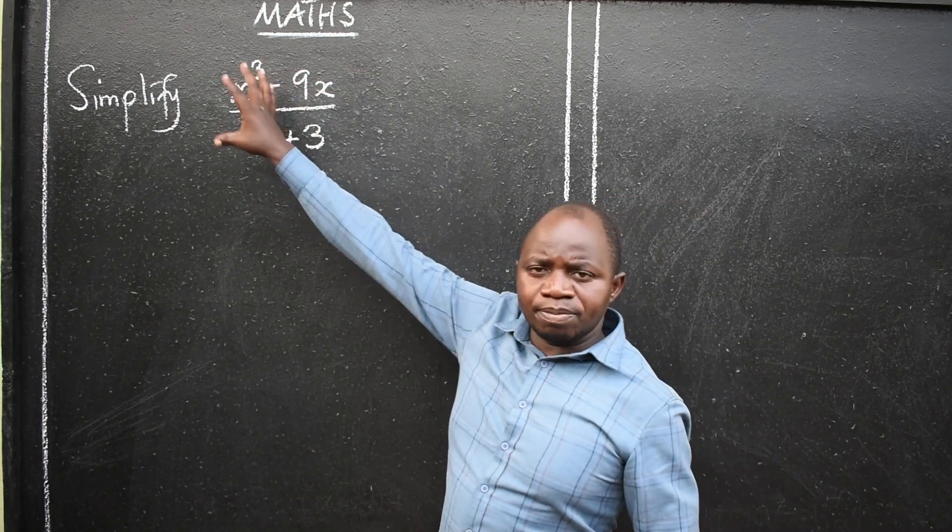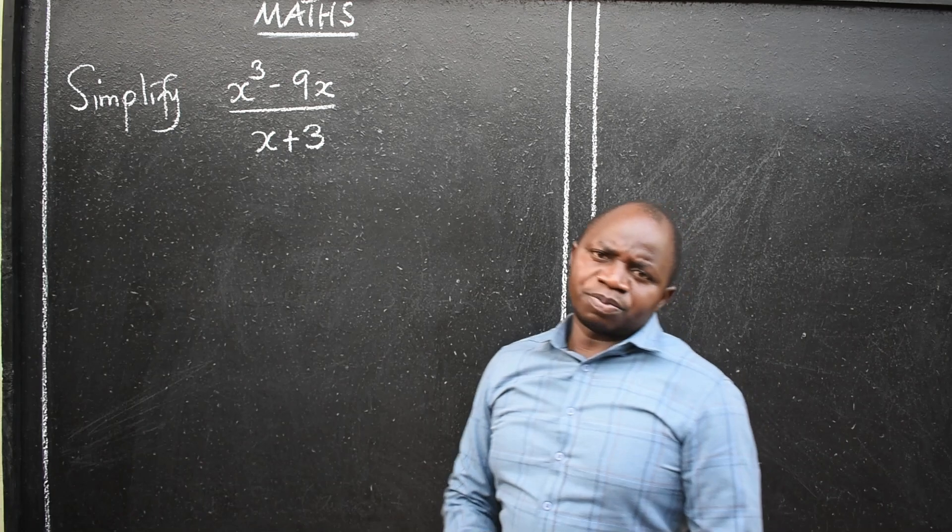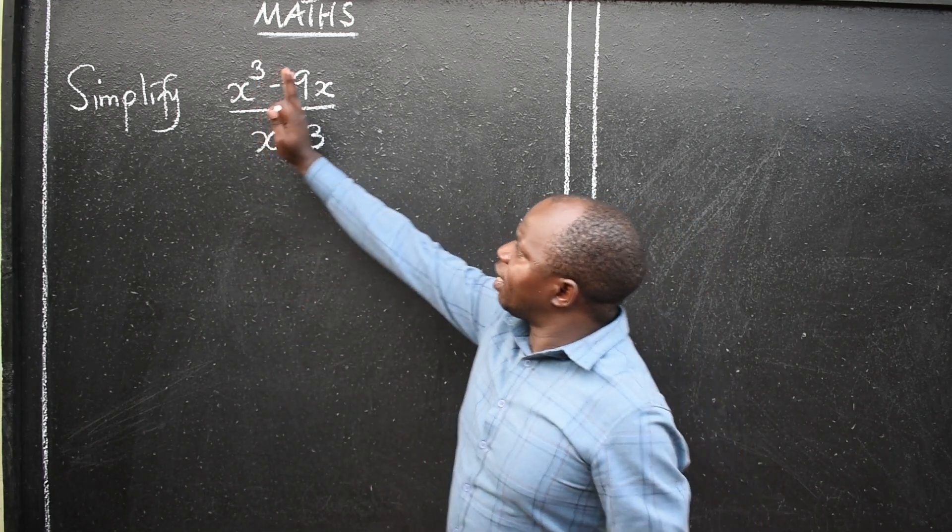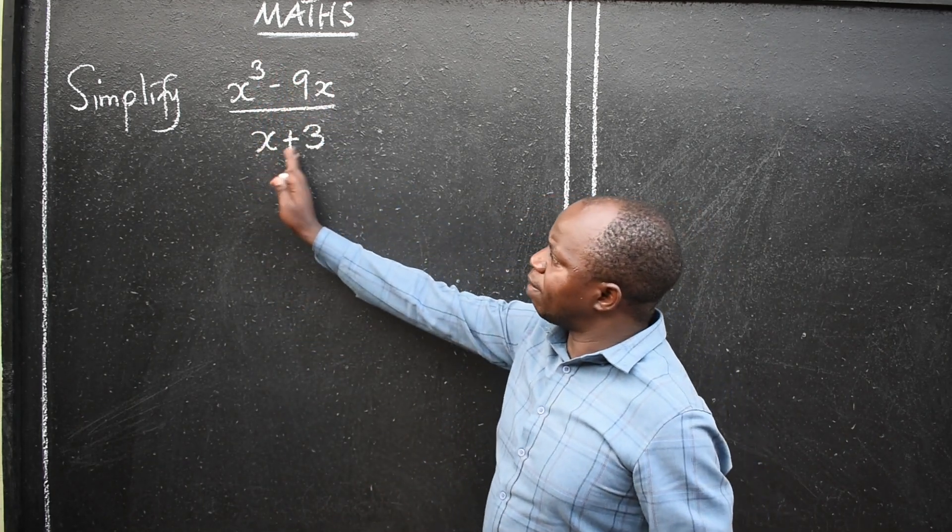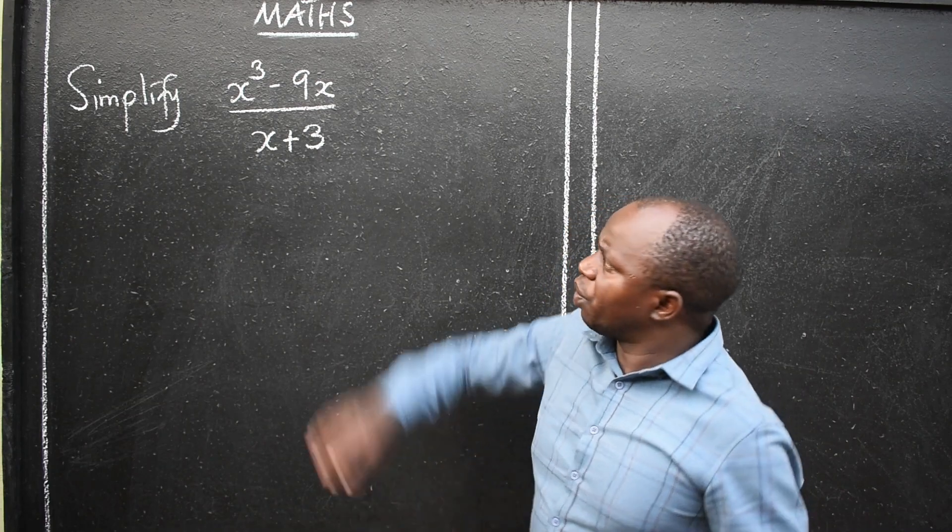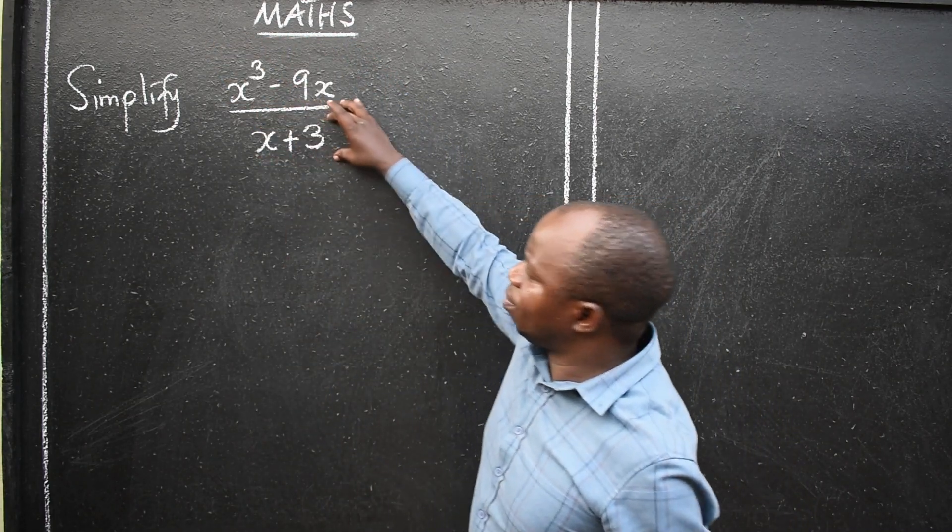So we are told to simplify this expression. x cubed minus 9x divided by x plus 3. We have the numerator here and the denominator.